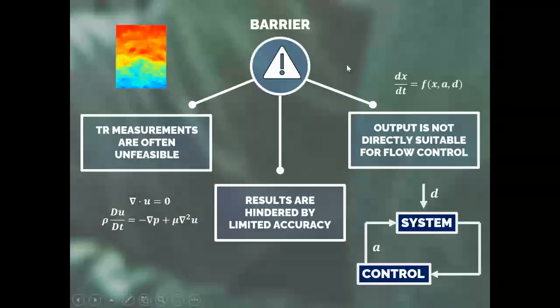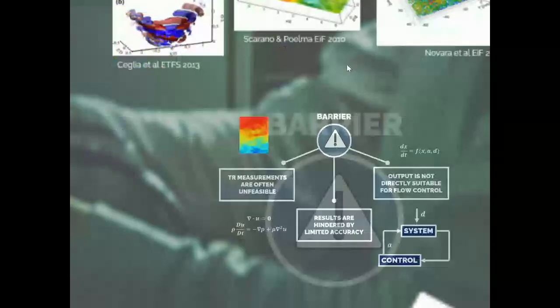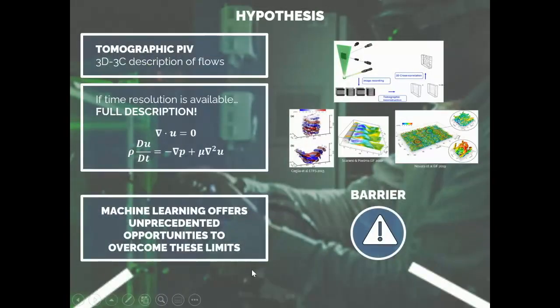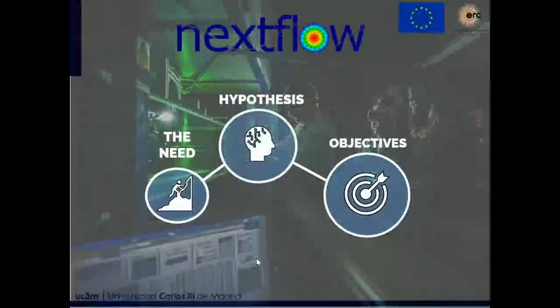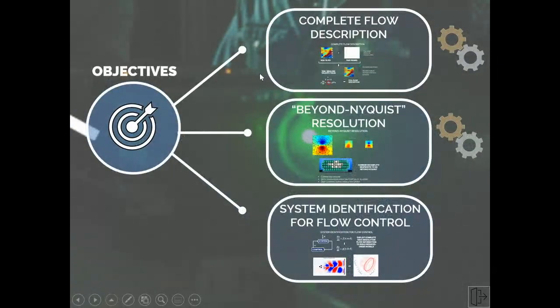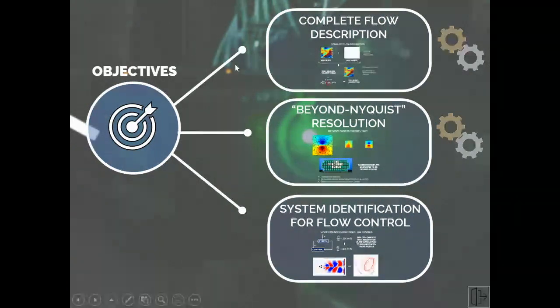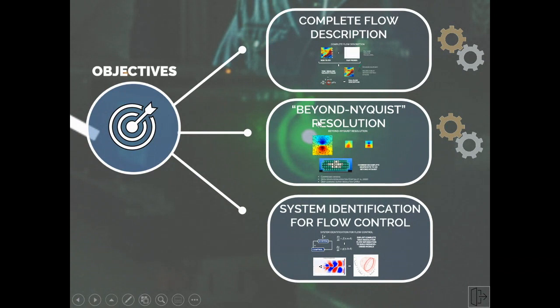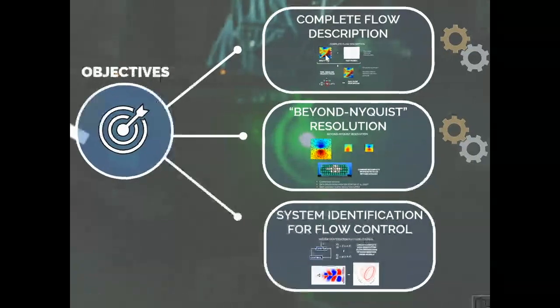But we don't have it from the experiment, unless we don't use very expensive equipment. This is what we will exploit in NEXTFLOW. And now let me go to the main pillars of the project, which are the objectives. So there are three main lines of research, three main work packages. The first one is achieving the complete flow description. The second one is improving the resolution and precision of optical techniques. And the third one is using methods for system identification with the idea of going towards flow control.